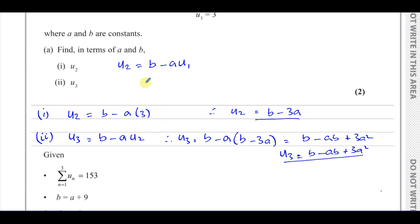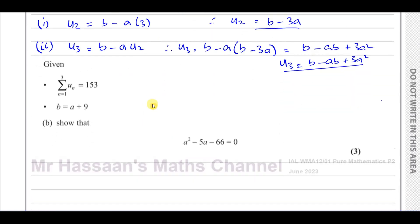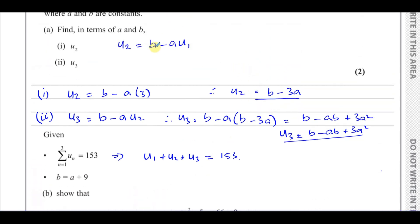That's the answer to part A, parts 1 and 2. For part B, given the sigma notation — which means the sum of the terms — U1 plus U2 plus U3 equals 153. We're also told that B equals A plus 9. We need to show this leads to the given equation.